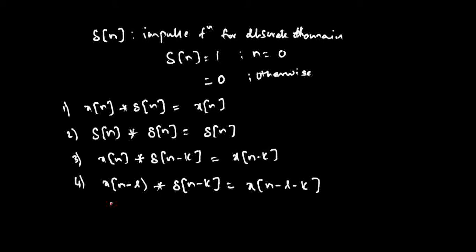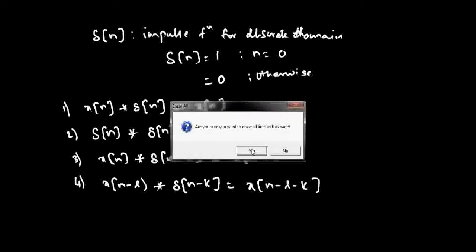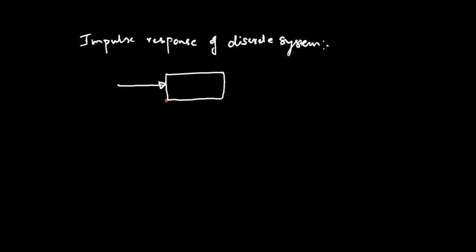Impulse response is of interest to us now. Since we have already understood what delta of n is — the impulse function — let's try to understand what the impulse response is for a discrete system. The name itself says impulse response: there is a system, and we say it is a discrete time system.